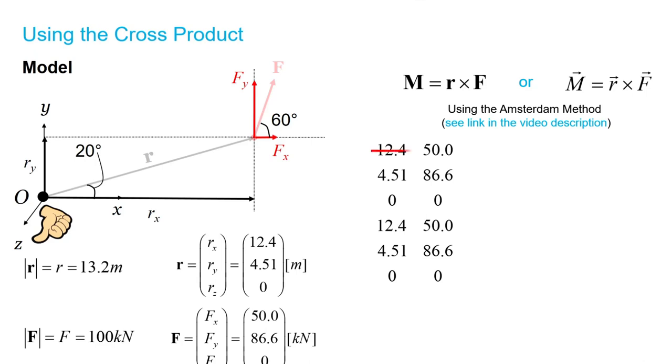What we then do is cross out the top and bottom row of this stack. And now what we can do to calculate the components of our moment is actually do a cross multiplication of this array. So, what we do is take the diagonal products. So, we get 4.51 multiplied by 0 and we subtract 0 times 86.6.